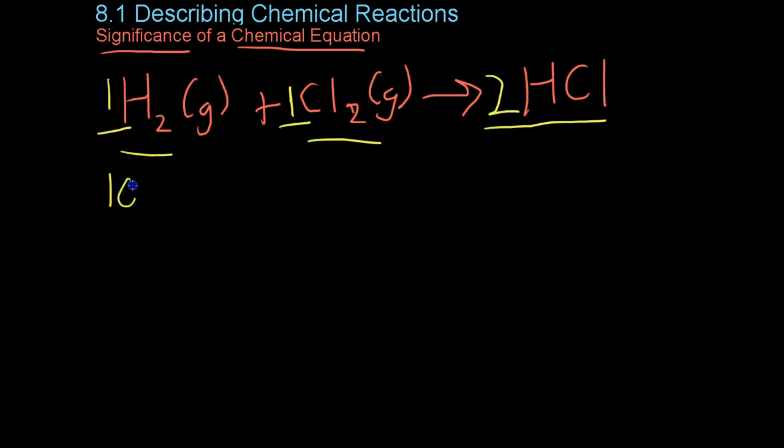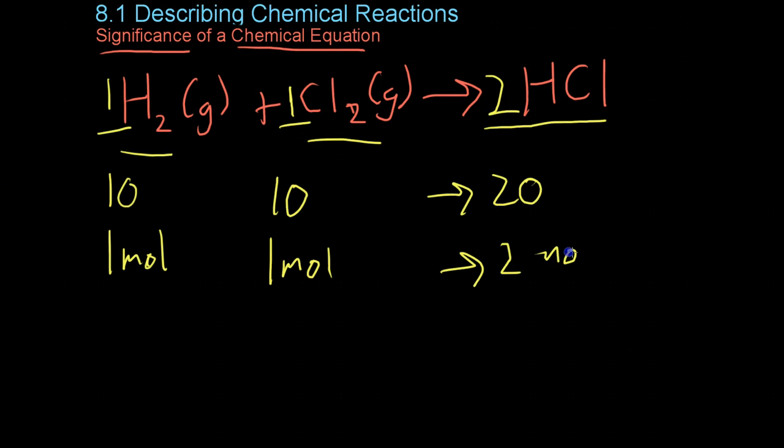And similarly, because these are relative amounts that are true for all reactions between these two chemicals, you can scale this up. So you could take 10, 10, and yield 20 molecules of hydrogen chloride. Or if you multiplied by Avogadro's number to get one mole of hydrogen chloride, then you would also get one mole of chlorine yielding two moles of hydrogen chloride.